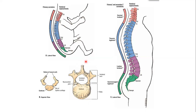To recapitulate: what are the parts of a typical vertebra anywhere in the body, whether cervical or lumbar? It consists of a body or centrum, then it has a vertebral arch consisting of the pedicle and the lamina, and then it has three processes: the spinous process and two transverse processes.